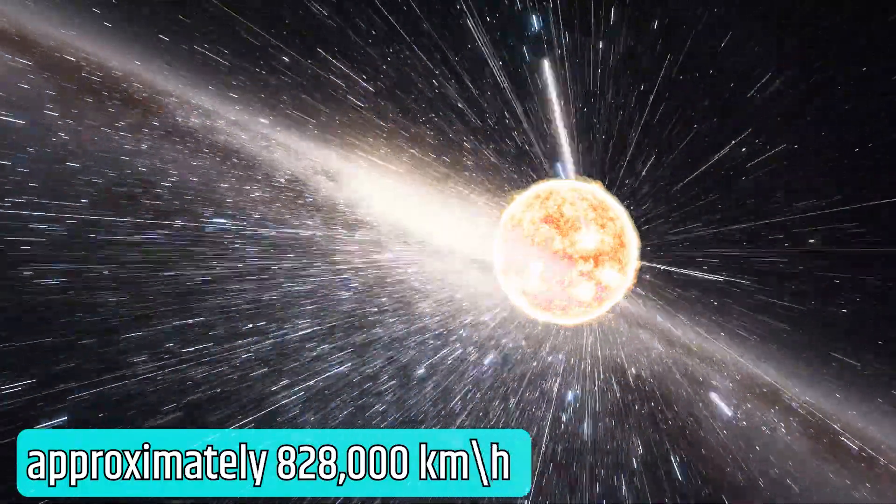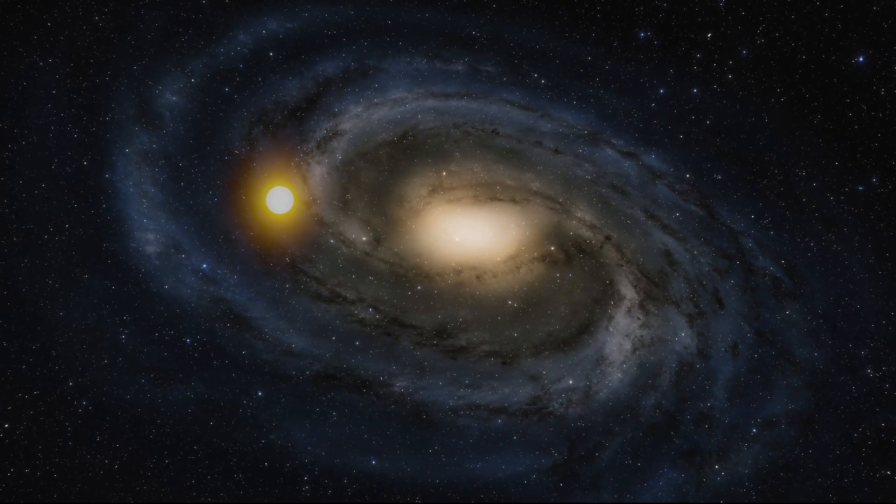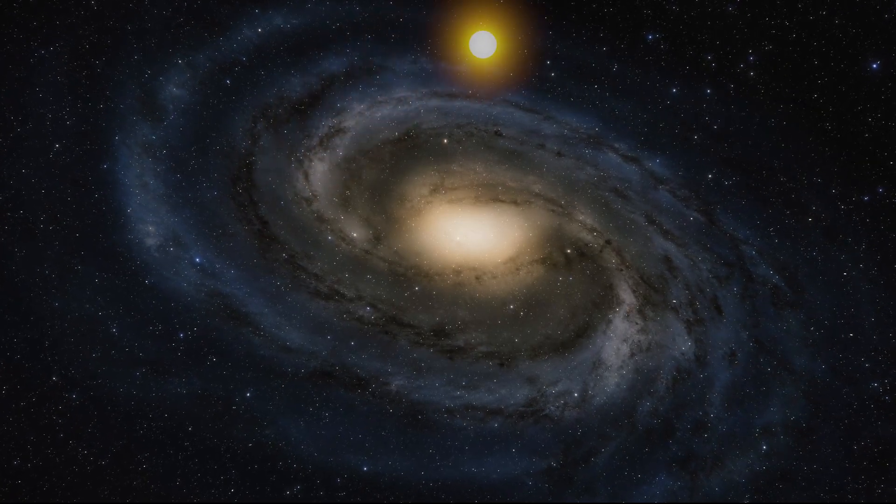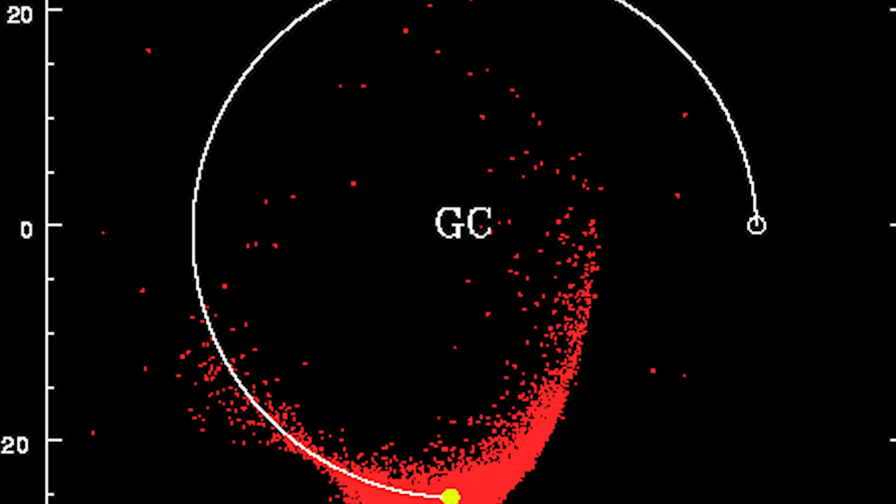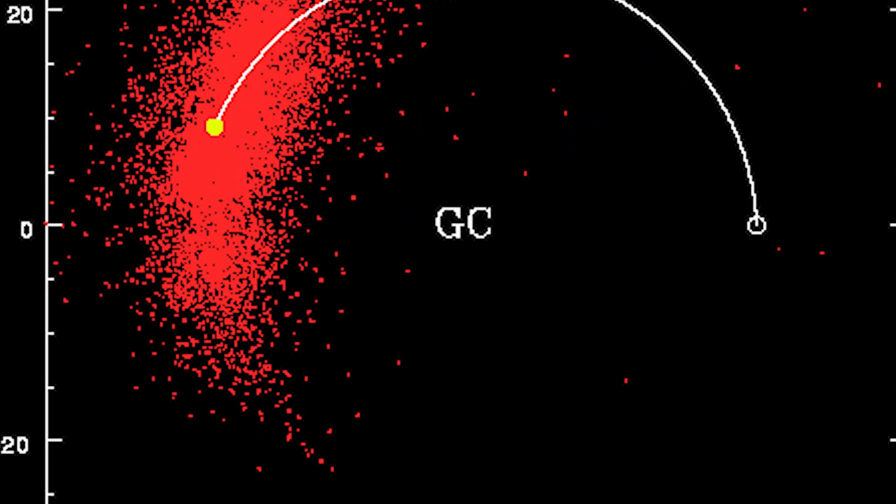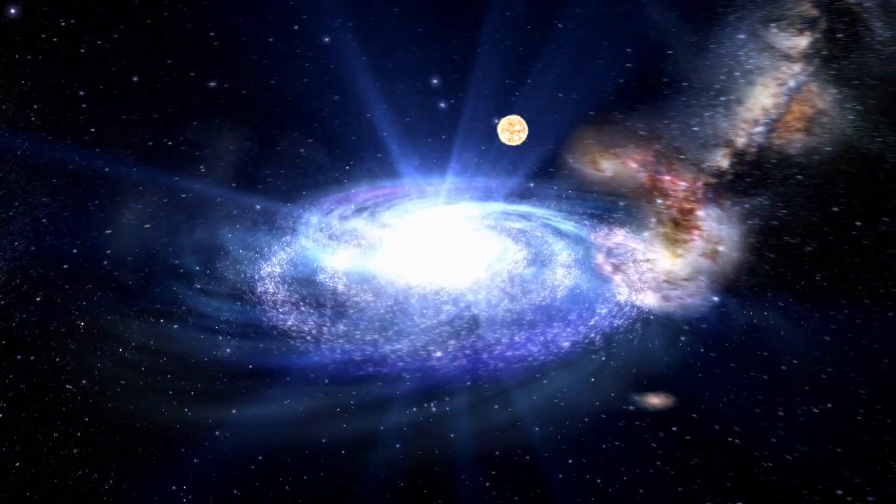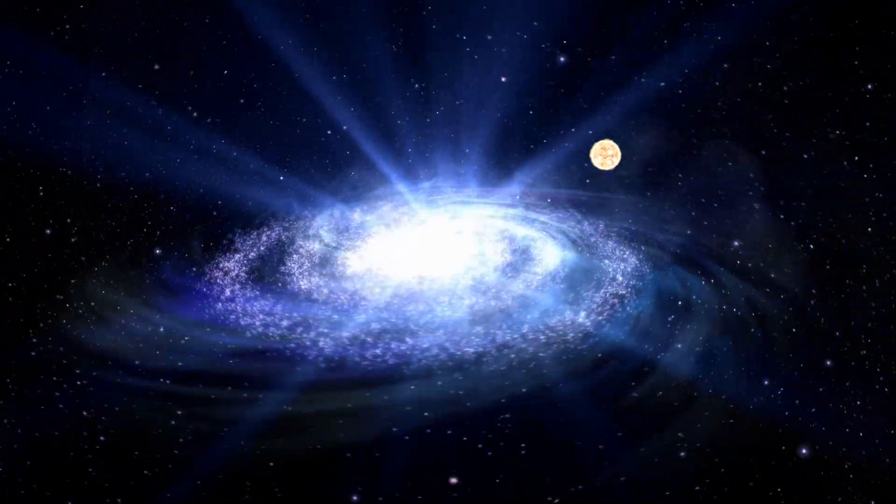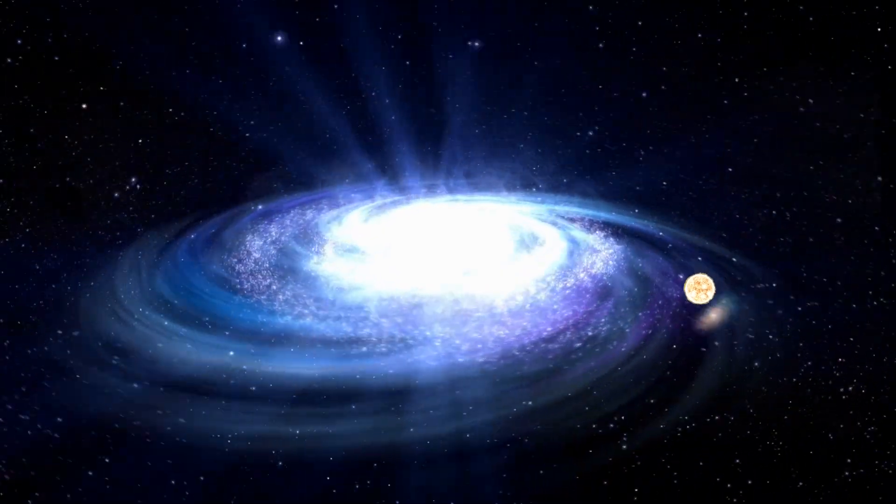Despite its speed of approximately 828,000 kilometers per hour, the vastness of the Milky Way means that it takes the sun a tremendous amount of time to complete this cosmic journey. The sun orbits the center of the Milky Way at a distance of about 28,000 light years. Hence, despite its incredible speed, it takes around 230 million years for the sun to make one full orbit around the galactic center.